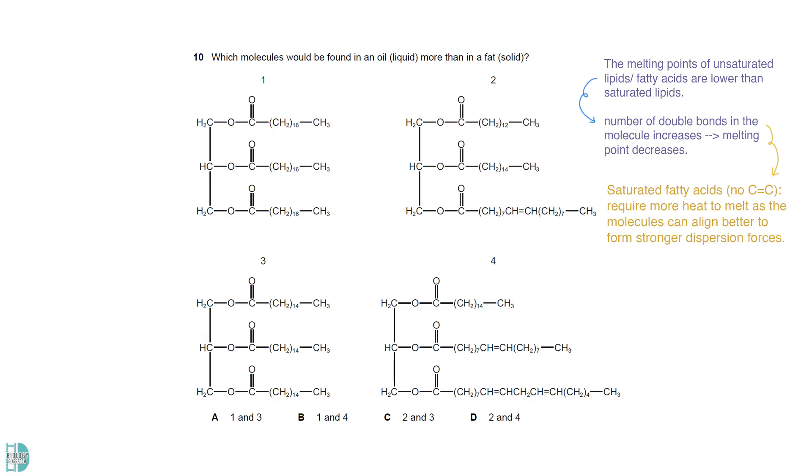In this picture, 2 and 4 contain carbon-carbon double bonds in their hydrocarbon chains. They are unsaturated. They melt more easily and would be found in a liquid more than in a solid.